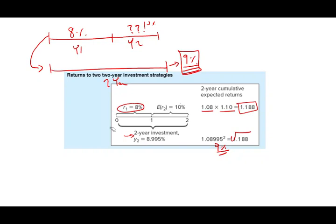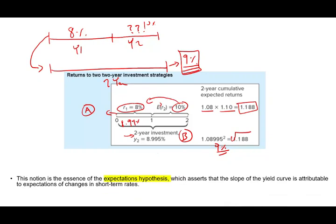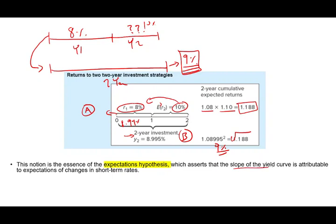Call this Investment B (the two-year bond at 9%) and Investment A (rolling over: 8% in year one, then 10% in year two). For year one, both pay approximately equal amounts. In year two, Investment A compensates at 10% to make the total match Investment B. This is the expectations hypothesis, which asserts that the slope of the yield curve is attributable to expectations of changes in the short-term rate.